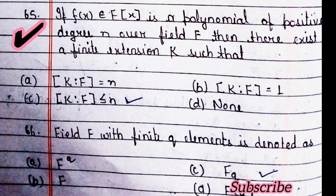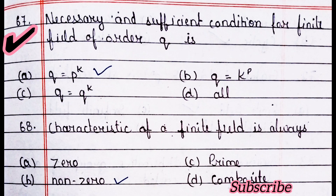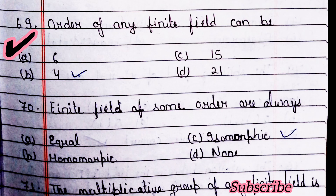Question 66: if f(x) belongs to F[x] is a polynomial of positive degree n over field F, then there exists a finite extension K such that — option C is right. Next question: a field F with finite q elements is denoted as Fq. Next question: necessary and sufficient condition for a finite field of order q is — option A is right. Characteristic of a finite field is always non-zero — option B is right.